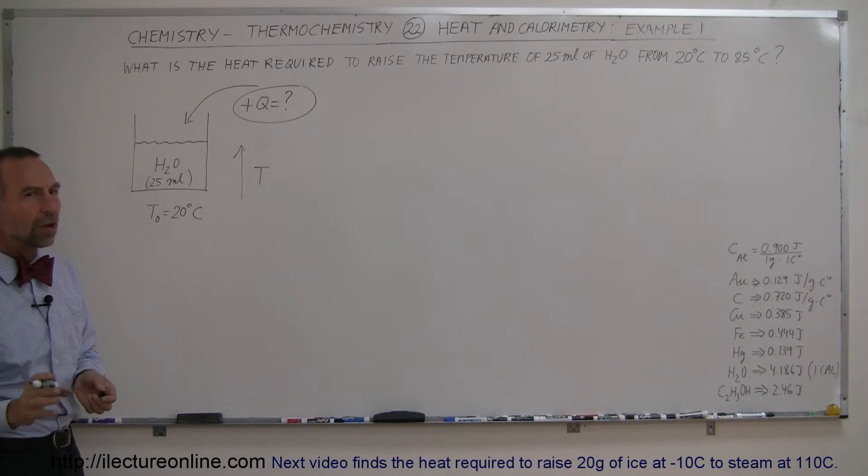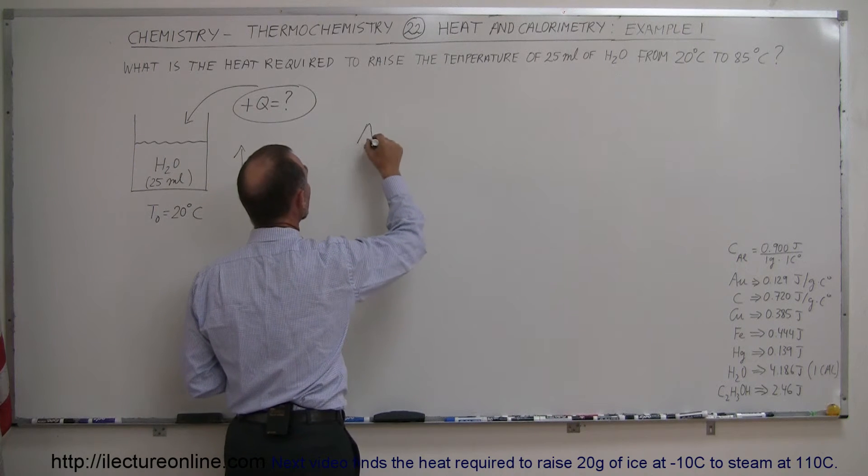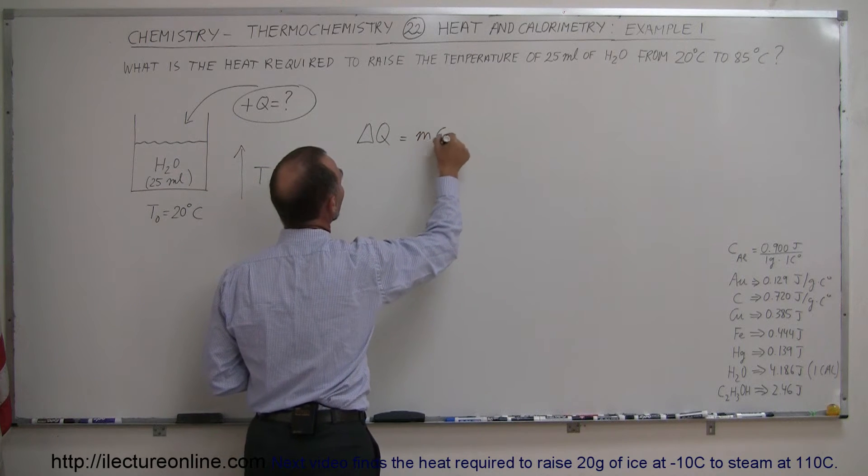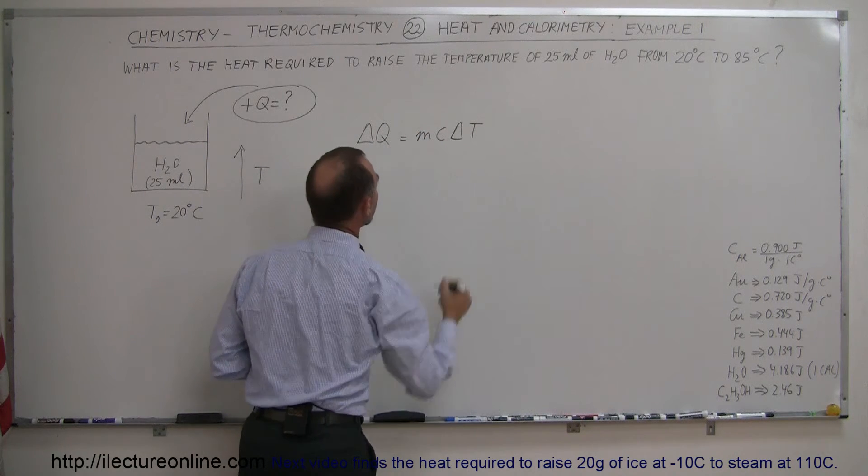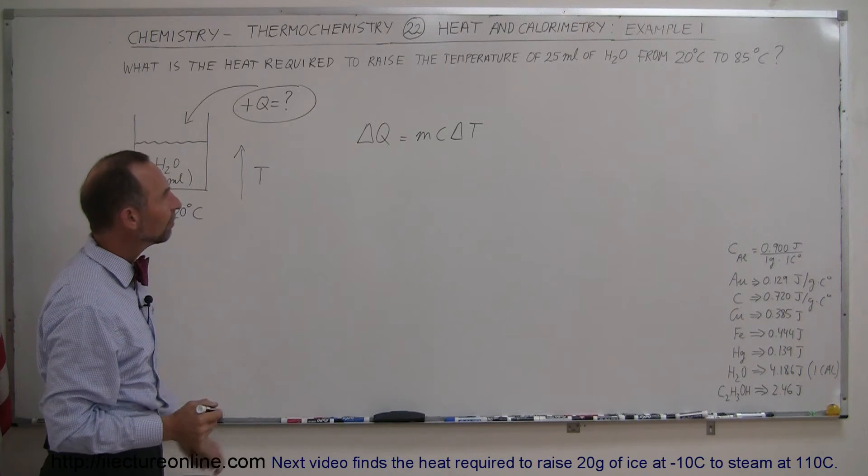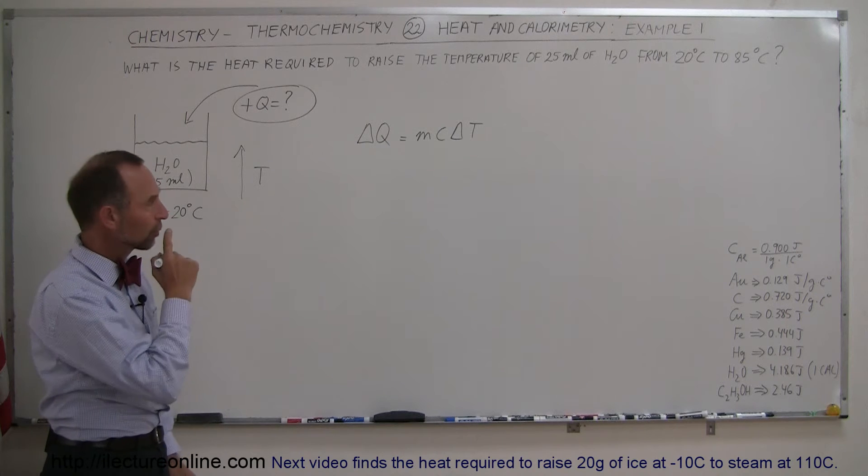So now we need an equation. The equation we're going to use is that the change, or the heat absorbed or given off, is equal to mc delta t. And that's what we're looking for, the change in the heat, right? So we know that's going to be positive, and the temperature is therefore going to go up.